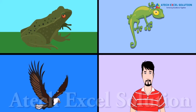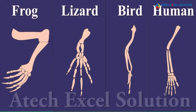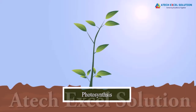Frog, lizard, bird, and human — they all have four limbs, thus a characteristic that is similar in all of them. This is called homologous characteristics. Characteristics are details of appearance, behavior, or a particular form or function. One typical example is photosynthesis, which is a homologous characteristic of plants.